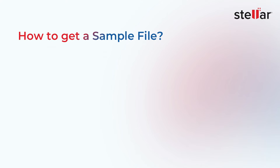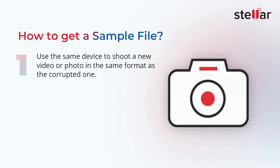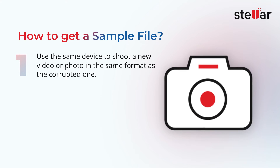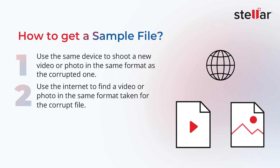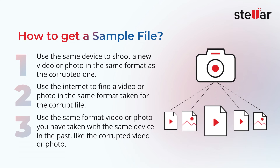So, how to get a sample file? You can get a sample file by using the same device to shoot a new video or photo in the same format as the corrupted one. You can also go to the internet and find a video or photo in the same format taken for the corrupt file. Or, you can use the same format video or photo you have taken with the same device in the past.